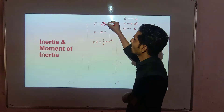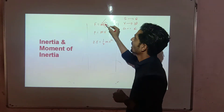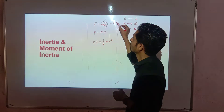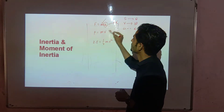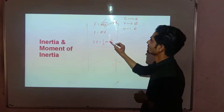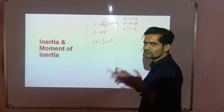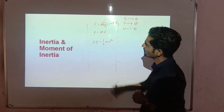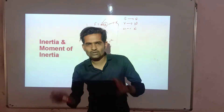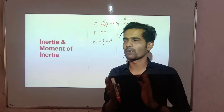What is the analog of mass in rotational motion? The analog of acceleration is already known — it is angular acceleration, and velocity becomes angular velocity. So the only factor that remains is mass. It is important to know what is the rotational analog of mass.